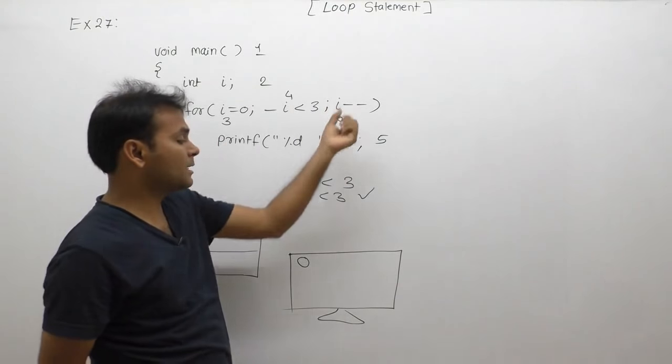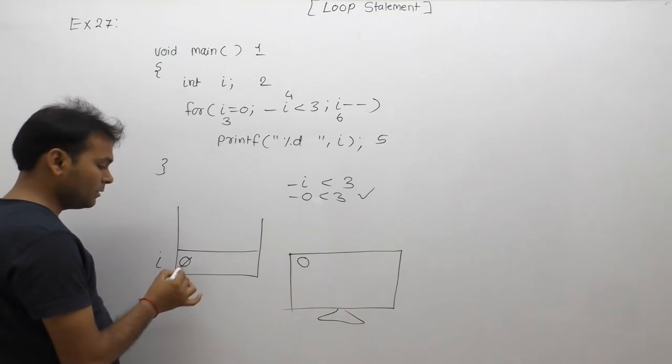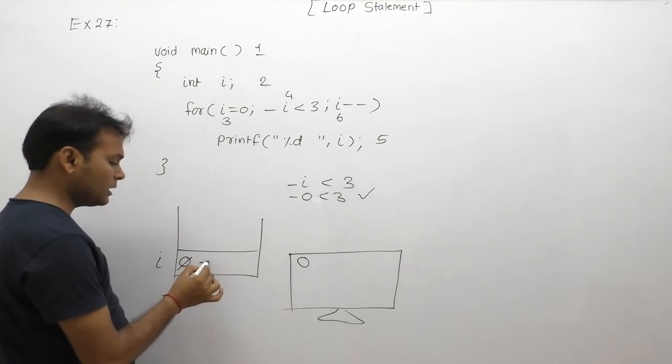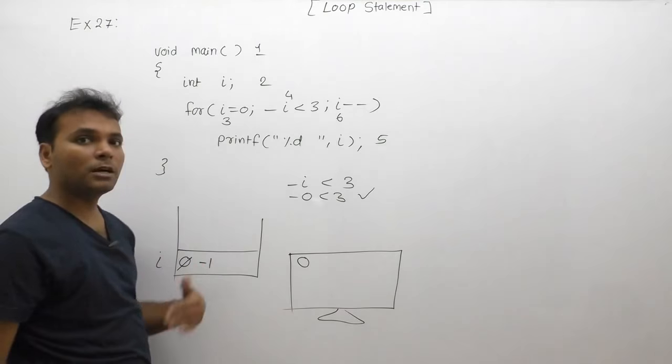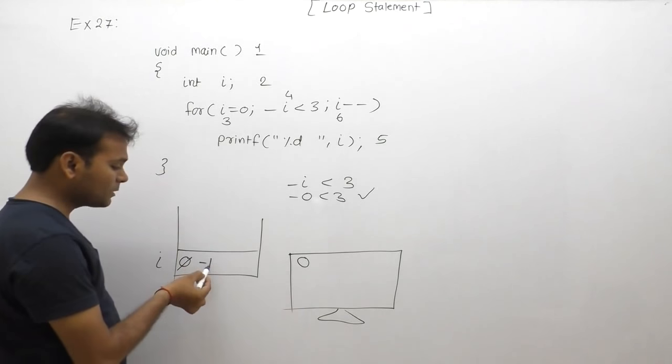Sixth case, after body execution, we go backward to the increment/decrement section. Sixth case perform what? i minus minus, means i's existing value 0 minus 1 is minus 1.